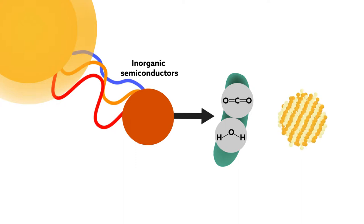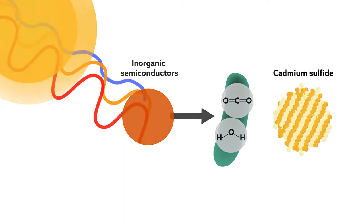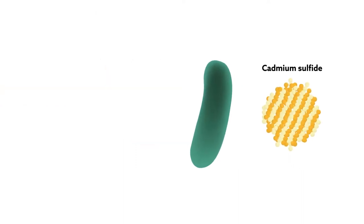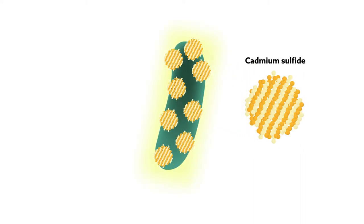They're using efficient light absorbers like cadmium sulfide semiconductors to try to supercharge bacteria by covering their bodies with semiconductor nanocrystals.